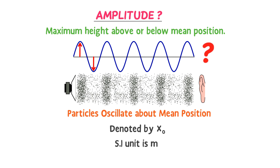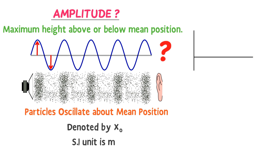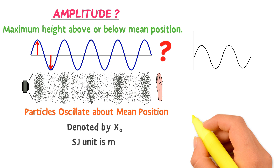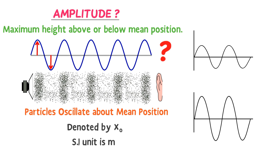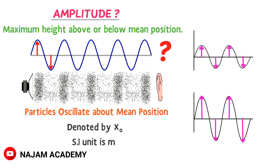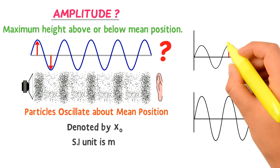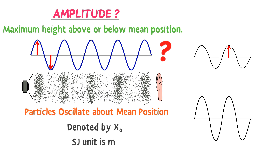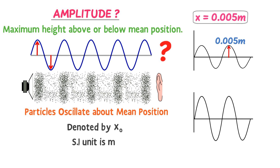Now how can we calculate or measure the amplitude of any wave? Consider these two waves. I should measure the distance or length of this peak point from the mean position using a ruler or any measuring device. For example, when I measure the length of this peak point from the mean position, suppose it was 0.005 meter. So the amplitude of this wave is x = 0.005 meter.